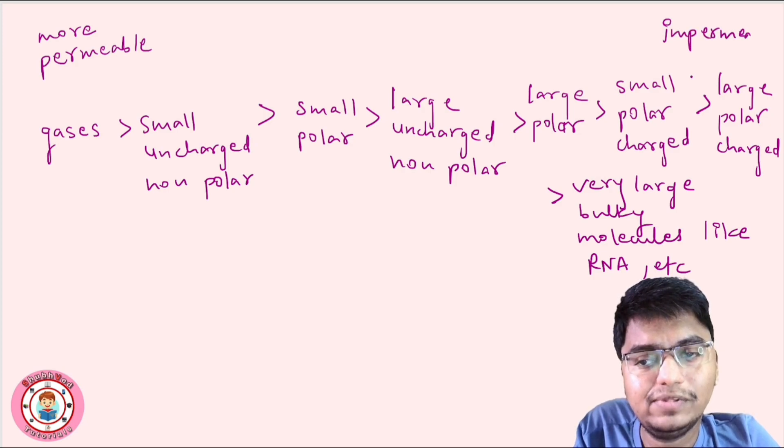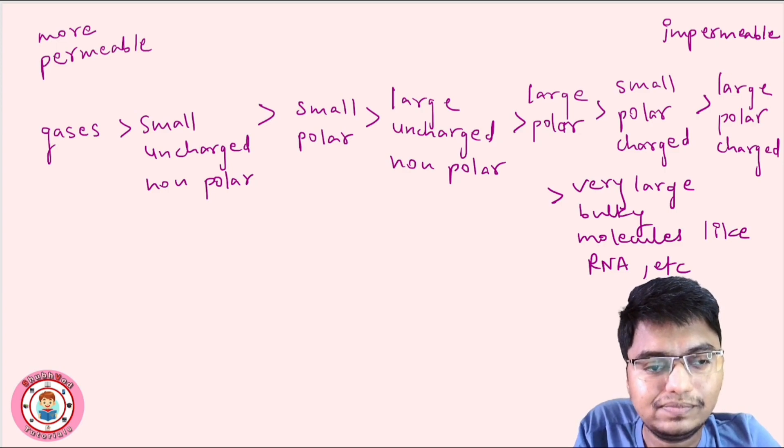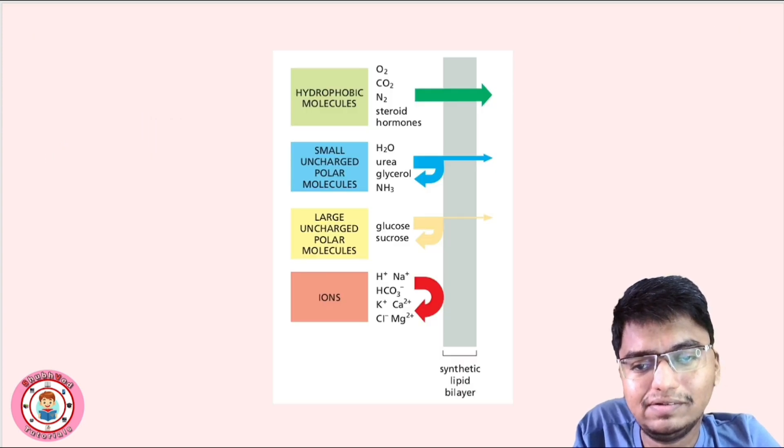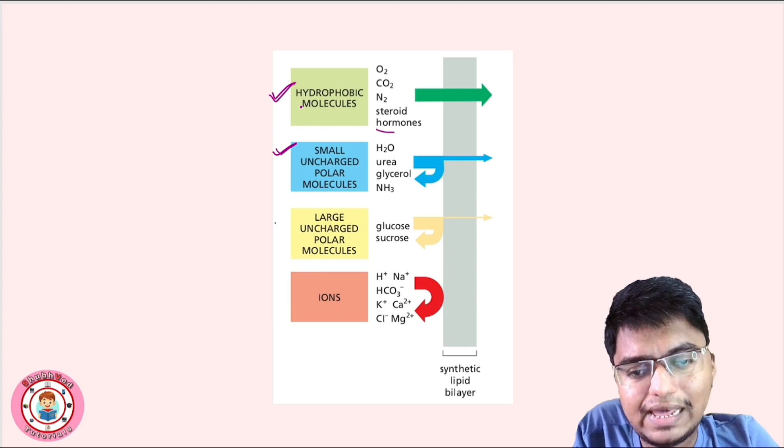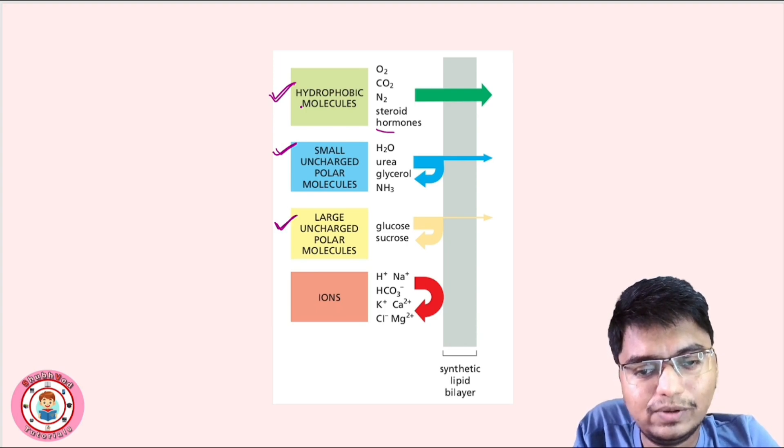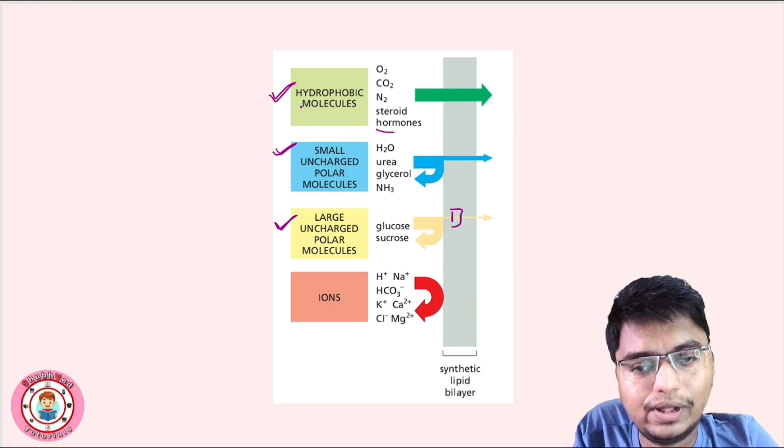Here are pictures. See this one picture, you can make a screenshot. Hydrophobic molecules easily pass: gases, oxygen, carbon dioxide, nitrogen, and thyroid hormones easily pass. Then small uncharged polar molecules: water, urea, glycerol, NH3 can pass. Large uncharged polar molecules, you can see the arrow is also short compared to this one. This is glucose and sucrose.